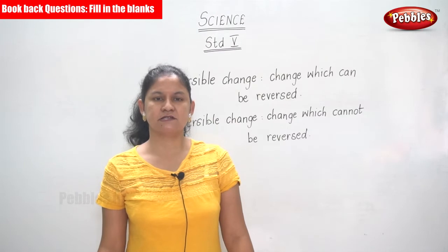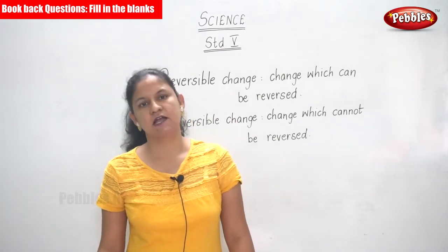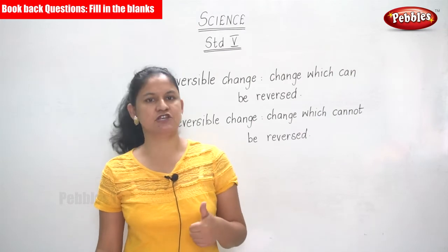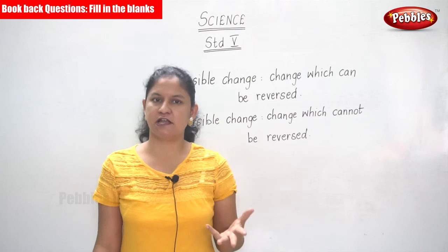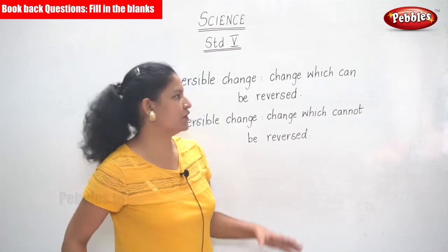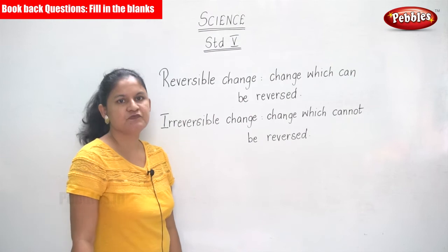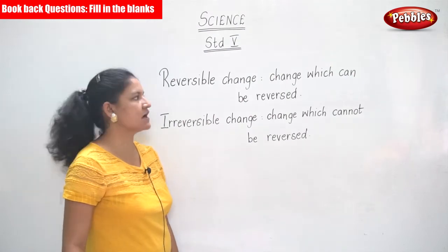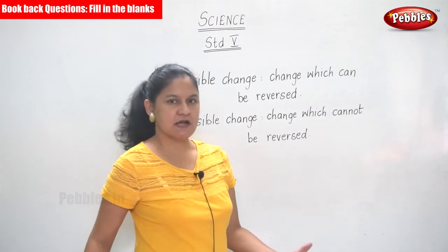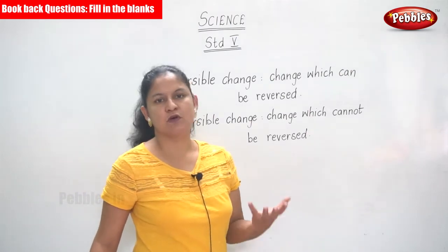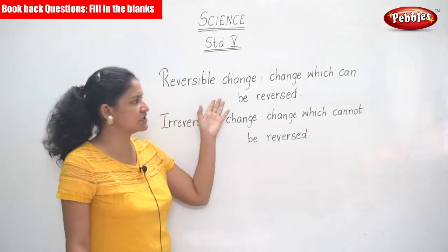Where matter is concerned, there are different types of changes — that is your reversible change, irreversible change, physical change, and chemical change. Reversible changes are changes which can be reversed. An example is water — water can be reversed.